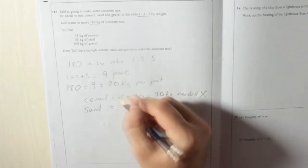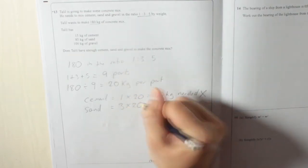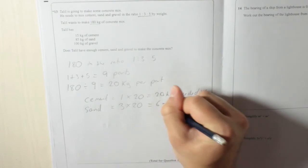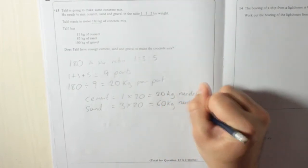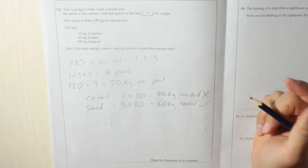So sand, which is three parts, three times 20, which means 60 kilograms needed. He has 85, you can put a tick there for that one.